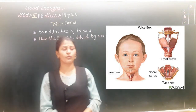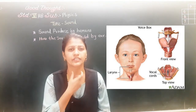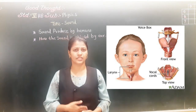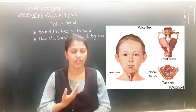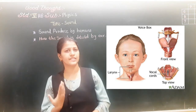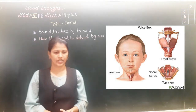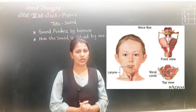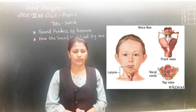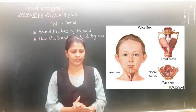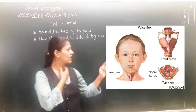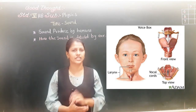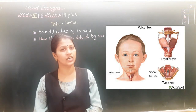There are two vocal cords above the wind pipe and the lungs. The lungs push the air upward, and when the lungs force the air through the slits of the vocal cord, the vocal cords start vibrating and the voice is produced.